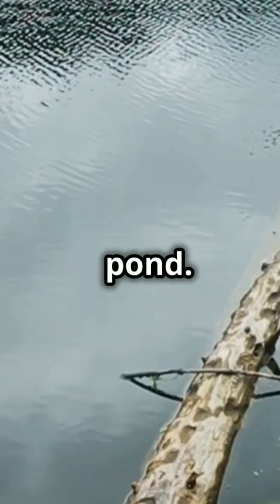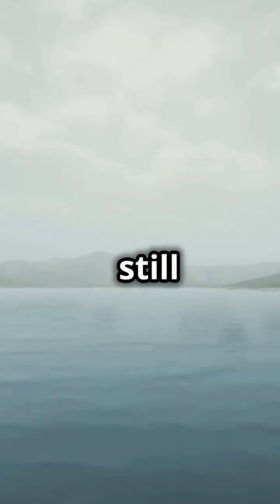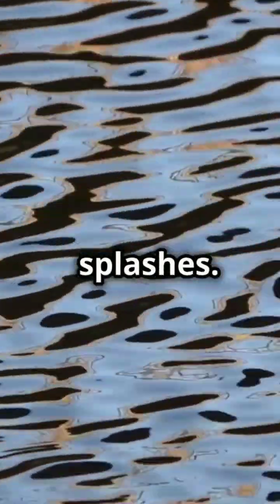Imagine space-time as a calm pond. The baseline metric, usually Minkowski space-time, is the still water. Now toss a pebble. That's our perturbation metric, A. We only focus on the first ripples, ignoring the big splashes.